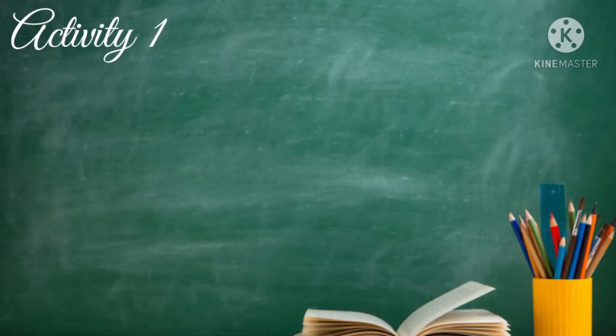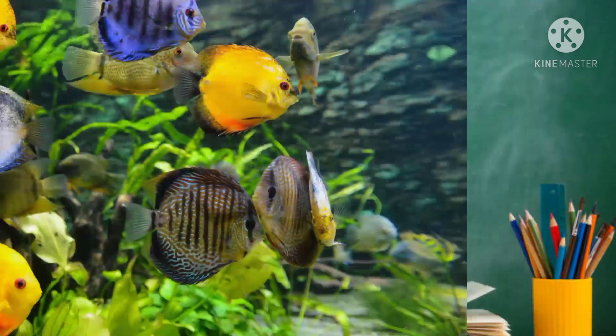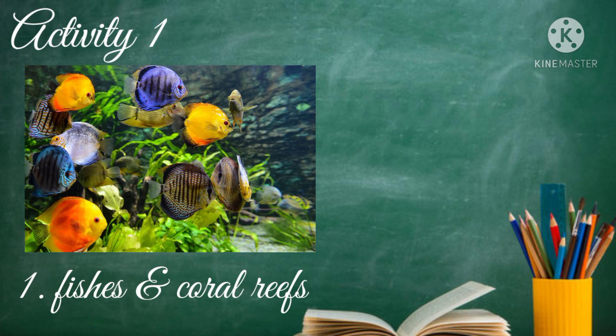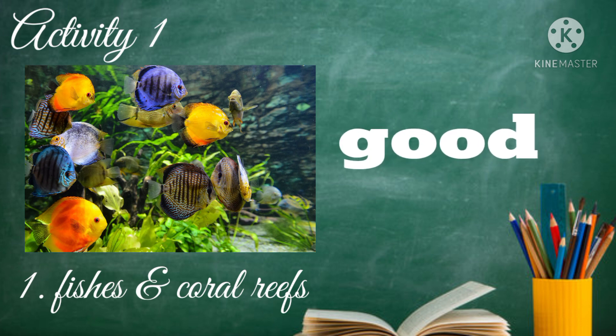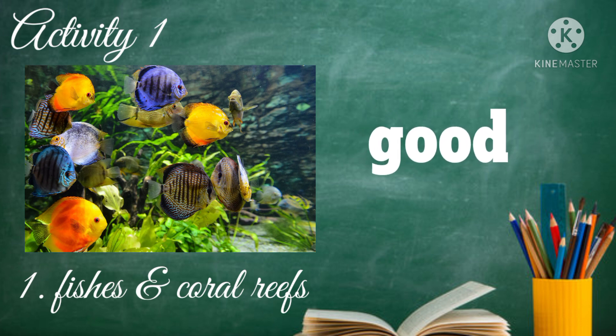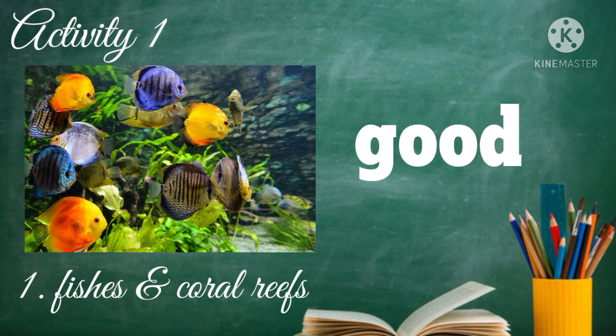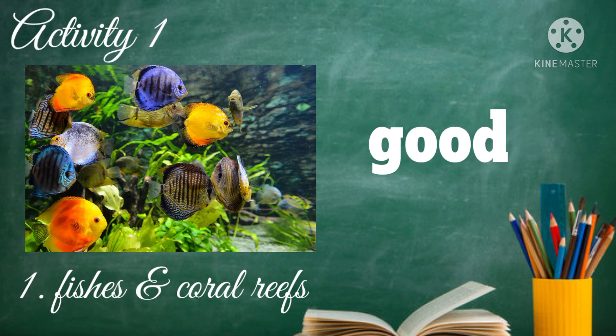For activity number one, study the given features of interactions among living organisms and tell if it is good or bad to the environment. The first feature: fishes and coral reefs. That is good to the environment because both species benefit from the relationship.